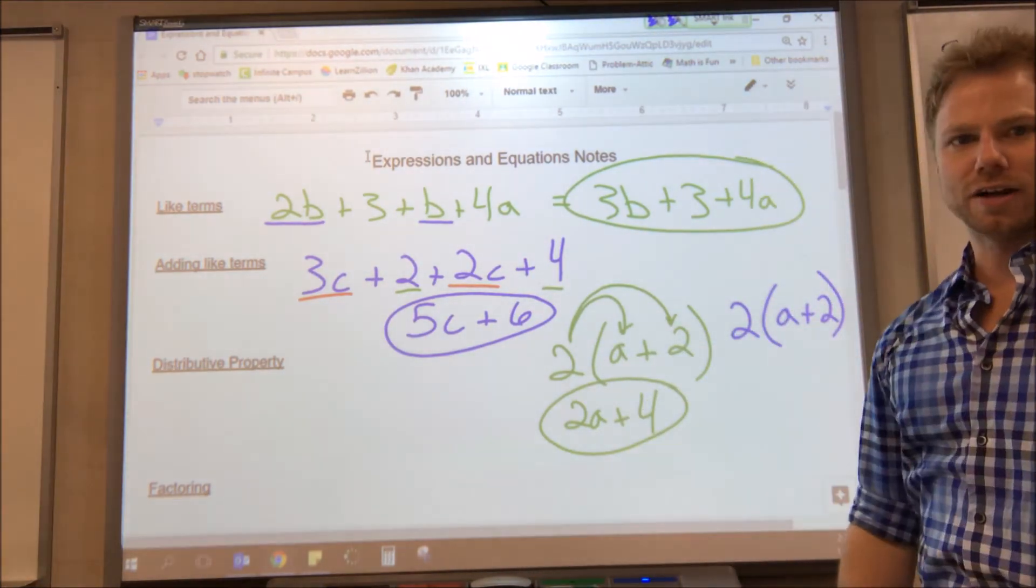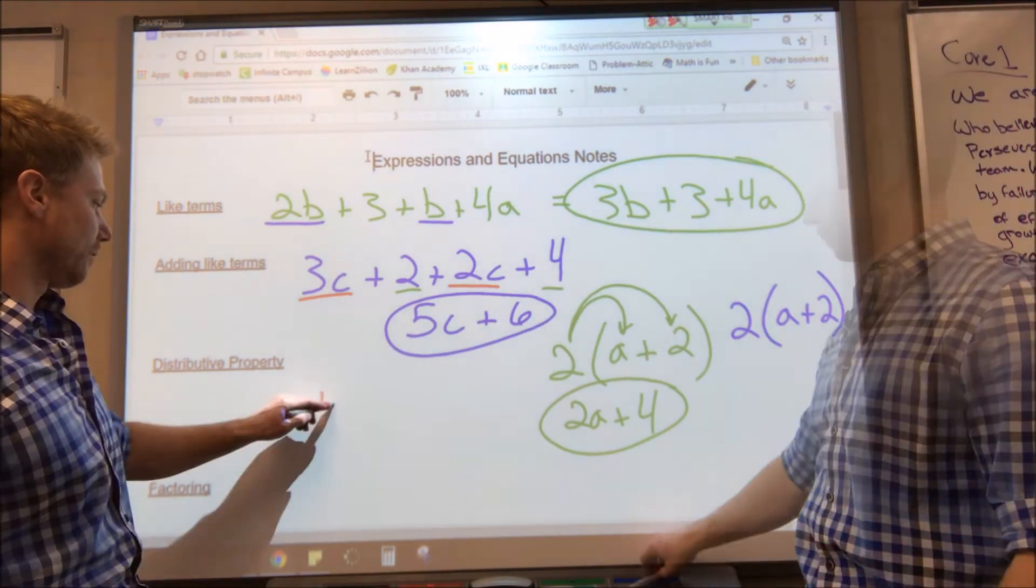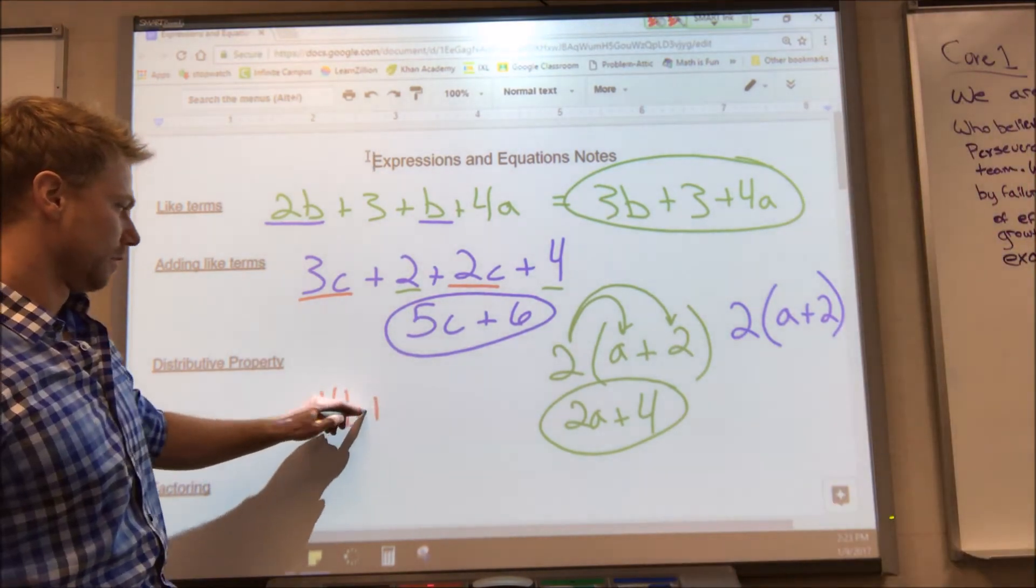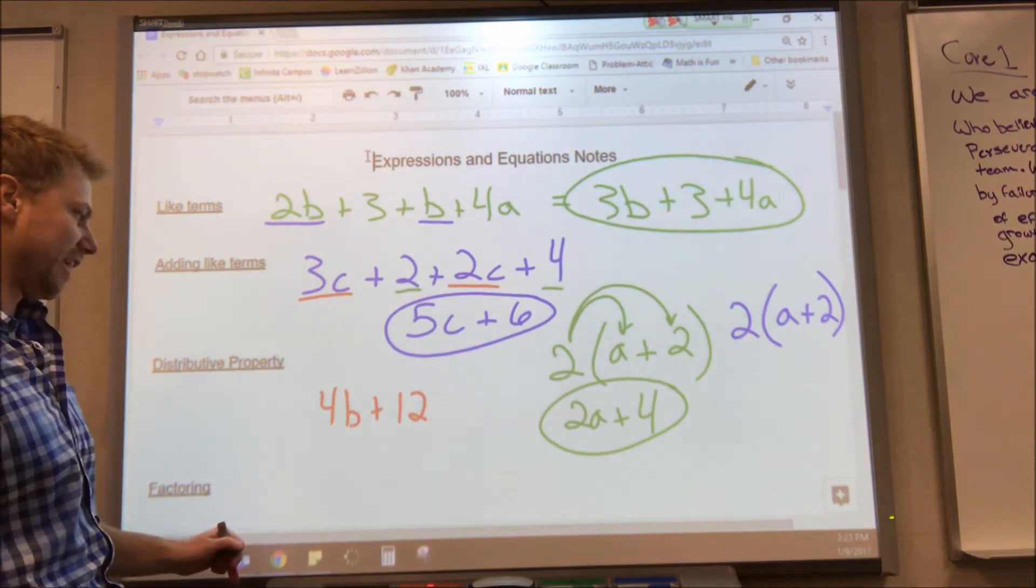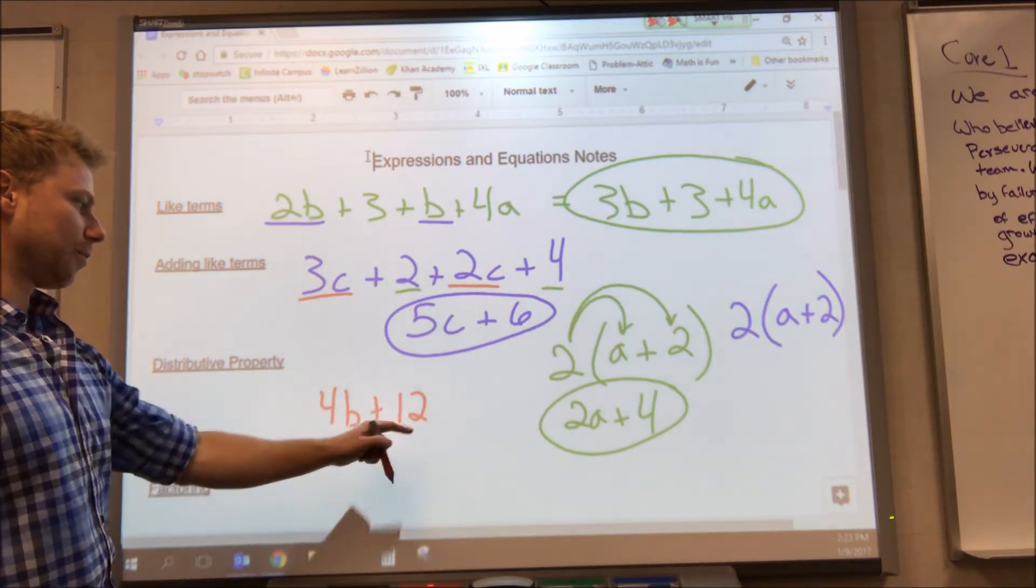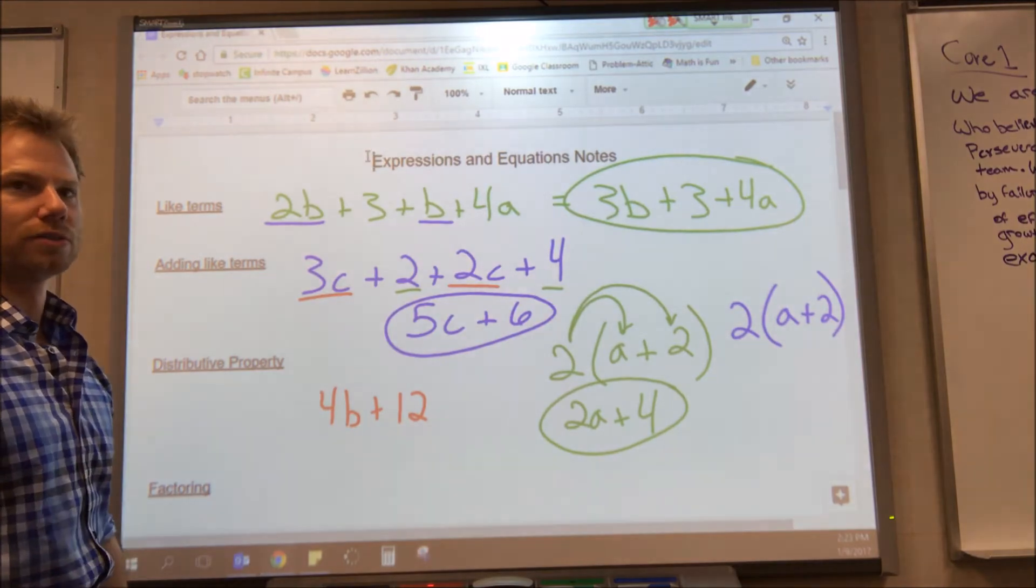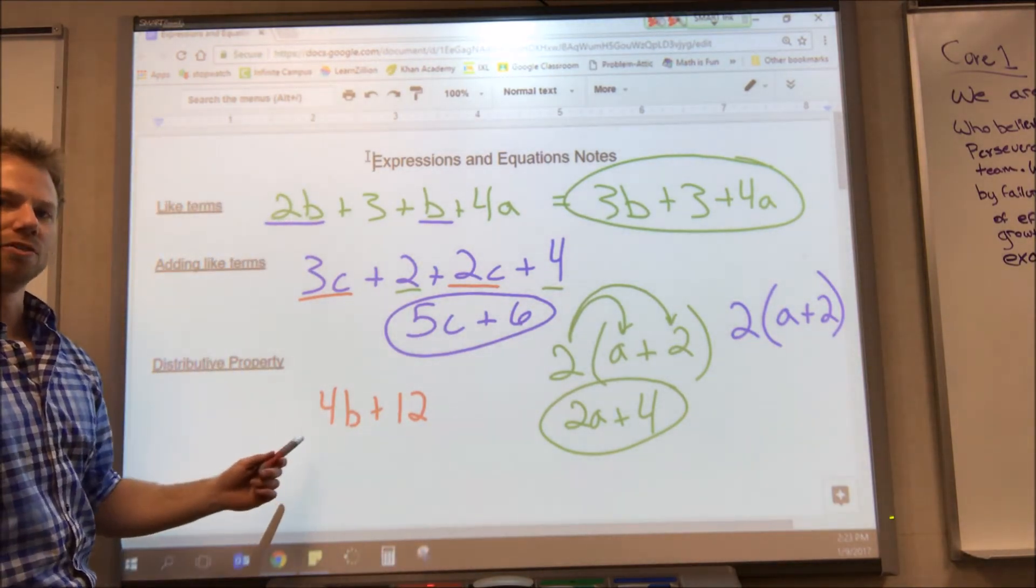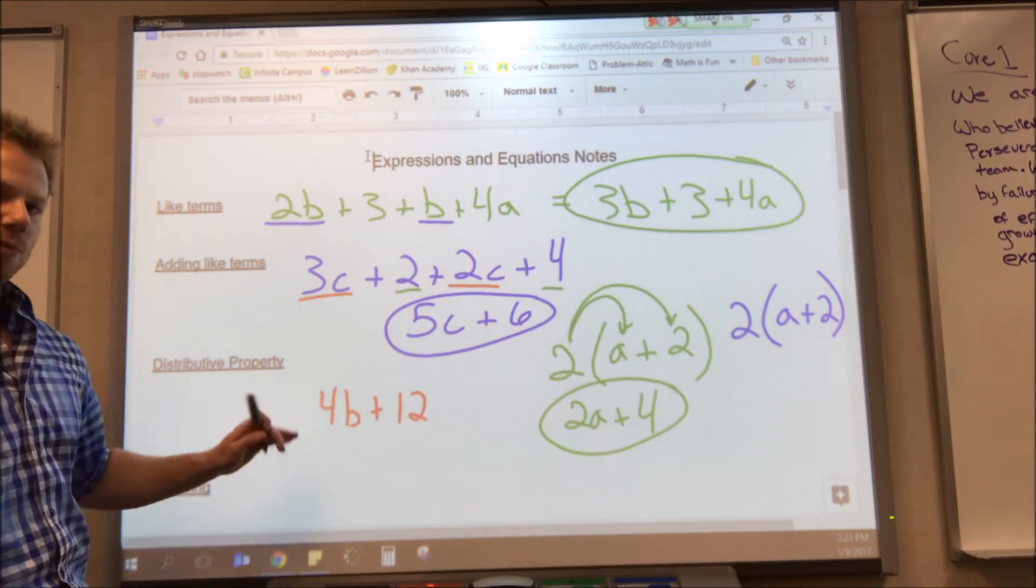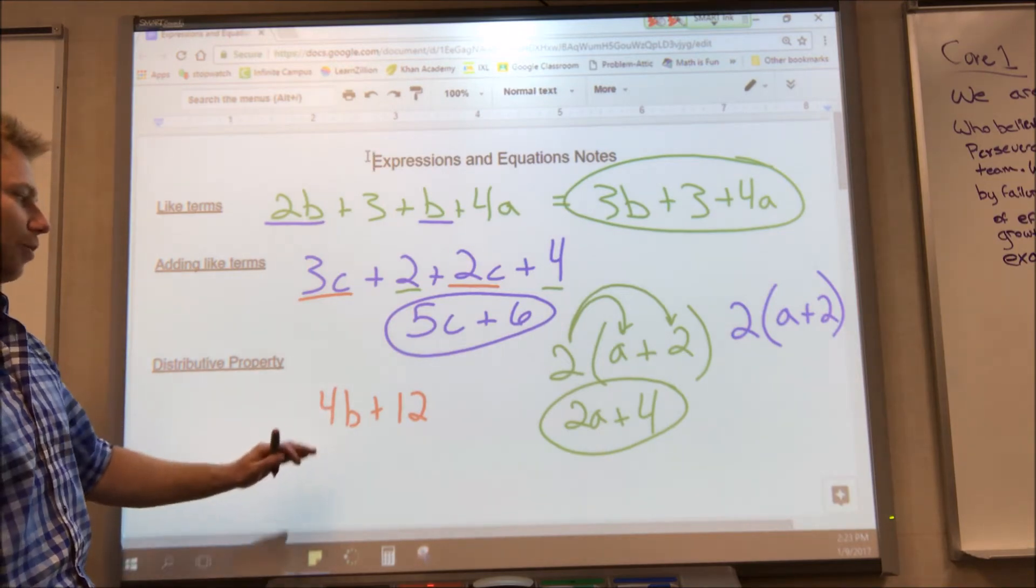If I had 4b plus 12, I'd find the greatest common factor again. What's the biggest number that goes into 4 and 12? If we're not sure, we can start listing factors of 4 and 12 until we find the biggest factor that is the same in both of them. That would be the greatest common factor.